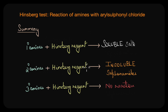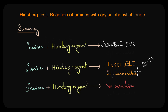In the reaction of secondary amines with Hinzberg reagent, we get an insoluble sulfonamide. The sulfonamide formed does not have a hydrogen atom attached to the nitrogen atom, so it cannot react with excess alkali to produce a soluble salt — the reaction stops at the insoluble sulfonamide. Tertiary amines do not react with Hinzberg reagent at all, remaining unreacted with a clear solution throughout. These differences in solubility arise from the structure of the amines and whether they have hydrogen atoms attached to the nitrogen atom.